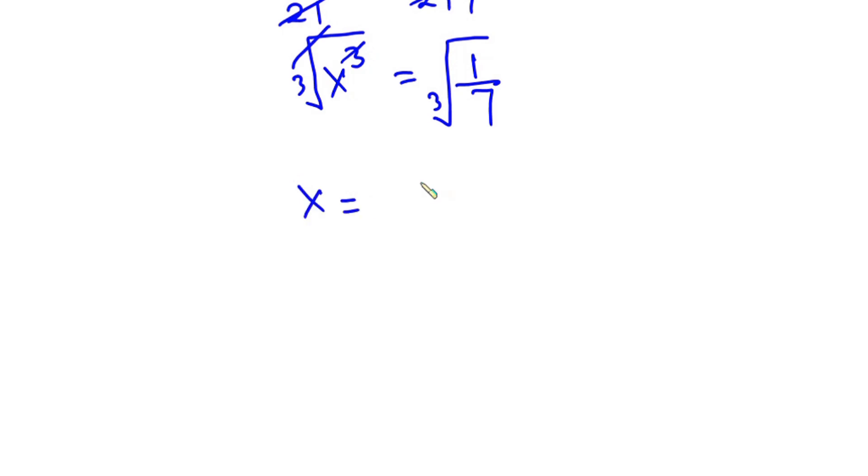Now we have x is equal to, and the right hand side could also be written as cube root of 1 over cube root of 7.